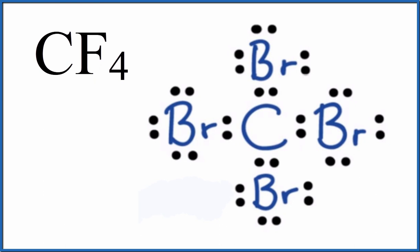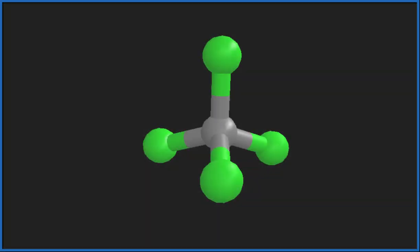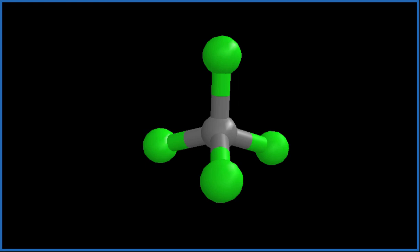So we need to think about how those Br atoms are going to repel each other, spread out, and give the CBr4 molecule its shape. That'll look something like this. This is CCl4, which is very similar to CBr4. In fact, the shape is the same.